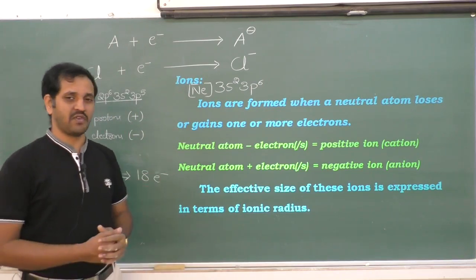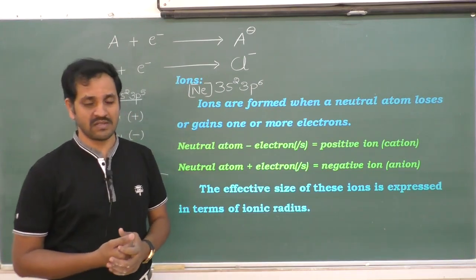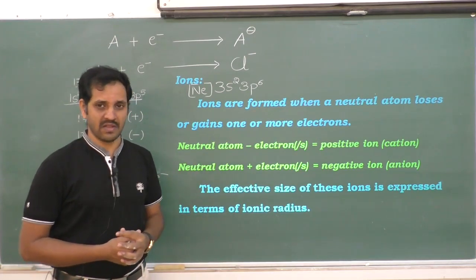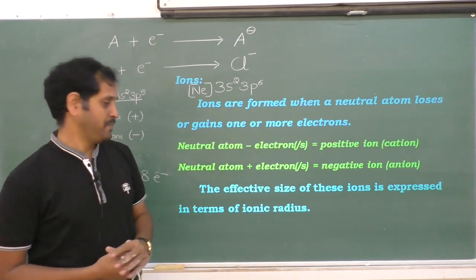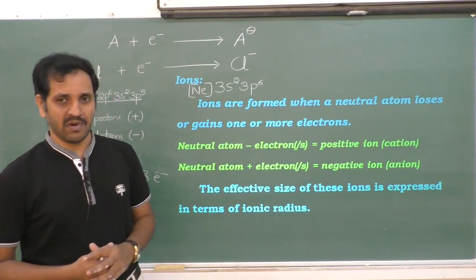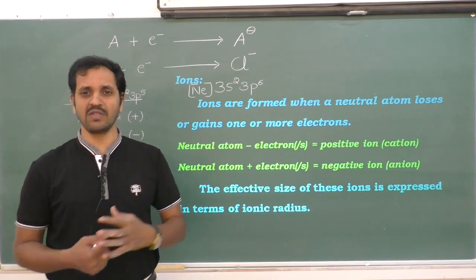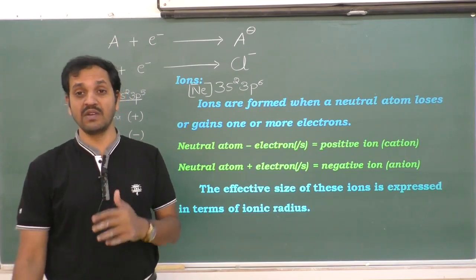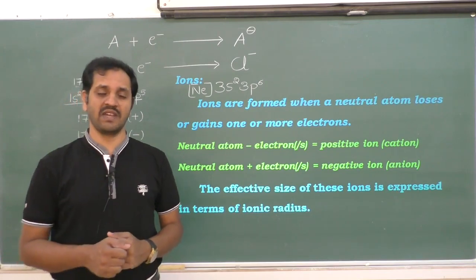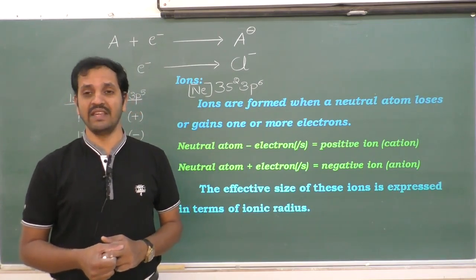So ions are formed when a neutral atom gains or loses one or more electrons — giving either a cation or an anion. It is needed to describe or estimate the effective size of a given ion, and the effective size of the ion is expressed in terms of ionic radius.